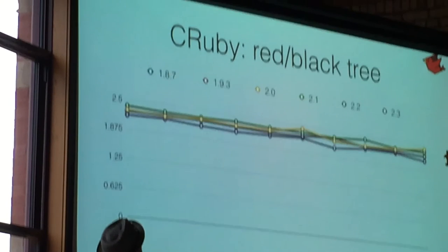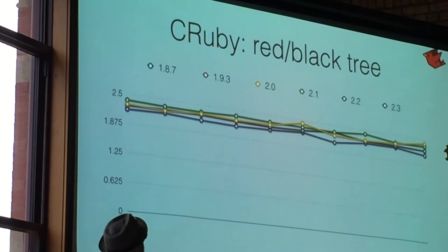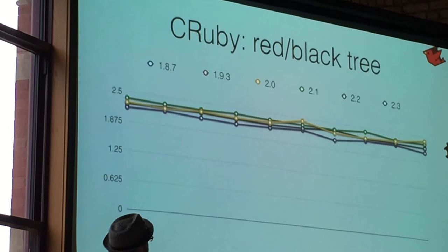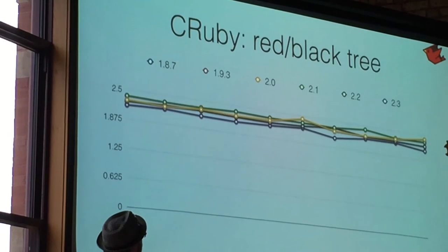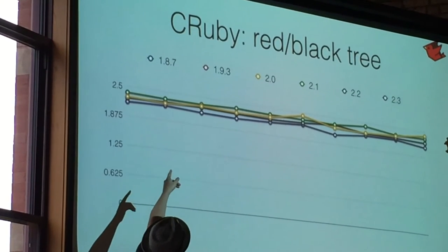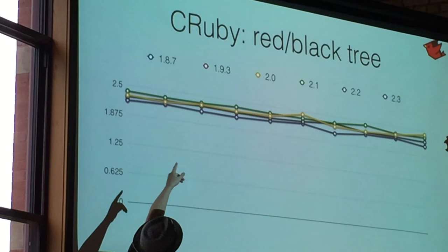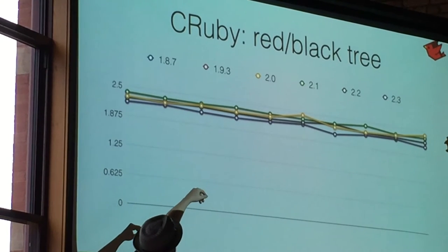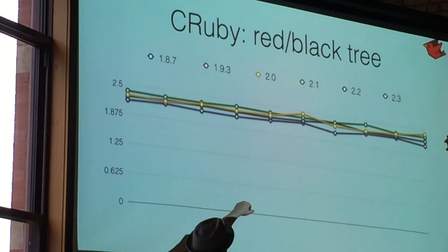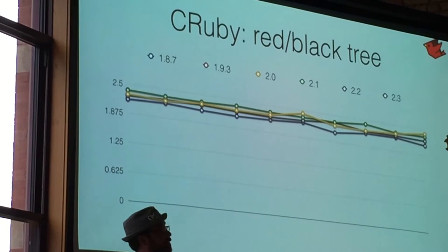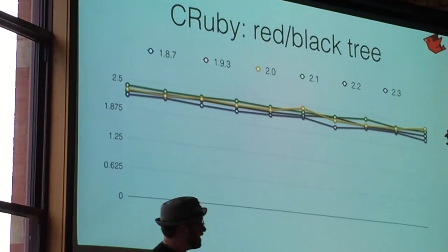So this is with 187 and 193 stripped out of the graph here. And like I said, there's not a whole lot of improvement. There is some improvement. The top is actually 2.1, the green line there. And then it gets muddled, but 2.3 is the fastest of the 2.x series.